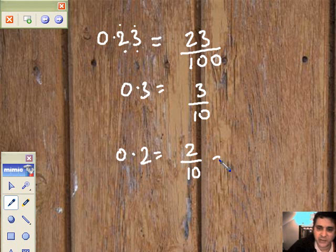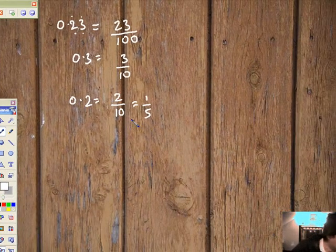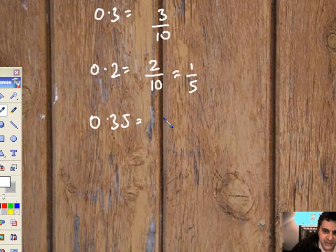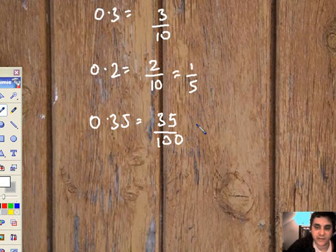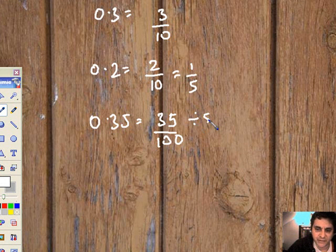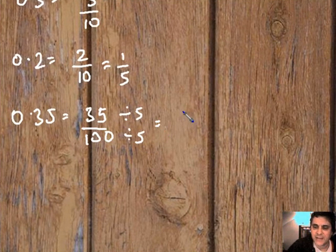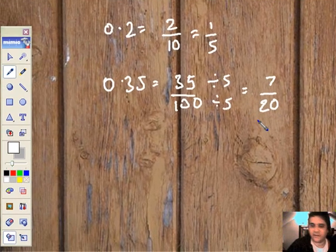It doesn't ask you to simplify it, but let's just practice that. 1 over 5, halving it down as before. 0.35, that's going to be 35 over 100. It doesn't ask you to simplify it, but we want to. If you divide top and bottom by 5, 5 goes into 35 seven times, 5 goes into 100 twenty times. We've got 7 over 20.